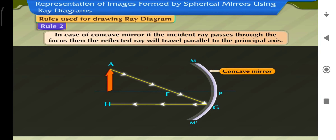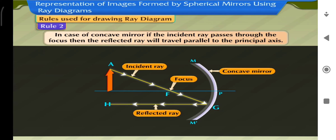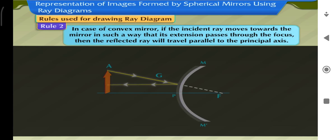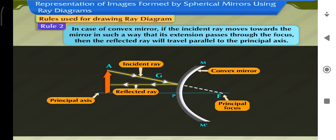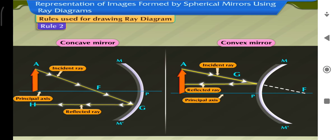Rule 2: In case of a concave mirror, if the incident ray passes through the focus, then the reflected ray will travel parallel to the principal axis. In case of a convex mirror, if the incident ray moves towards the mirror such that its extension passes through the focus, then the reflected ray will travel parallel to the principal axis. In both cases, the incident ray passing or appearing to pass through the focus makes angle i with the normal at the mirror surface, and the reflected ray makes angle r equal to i and passes parallel to the principal axis.